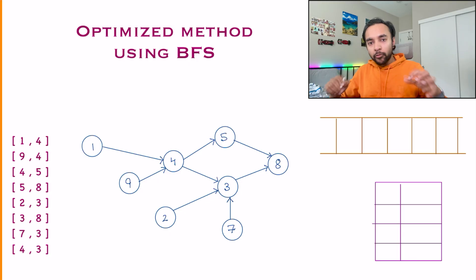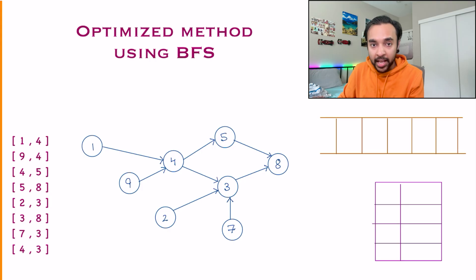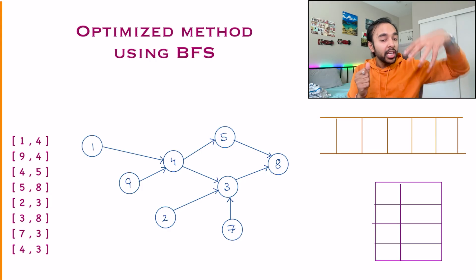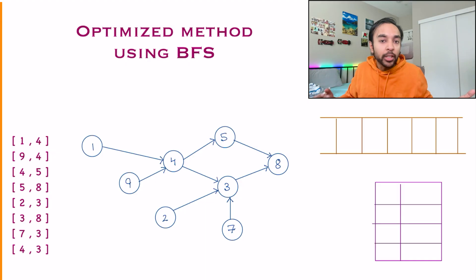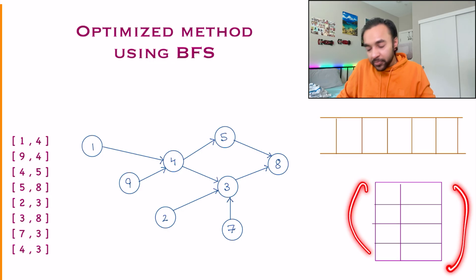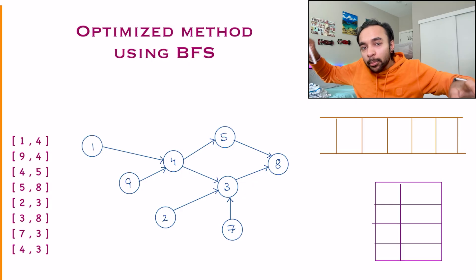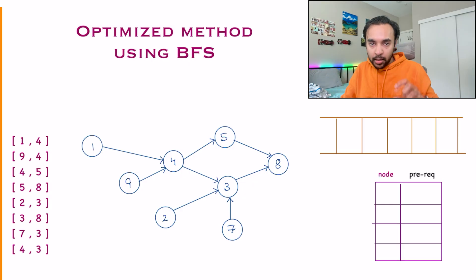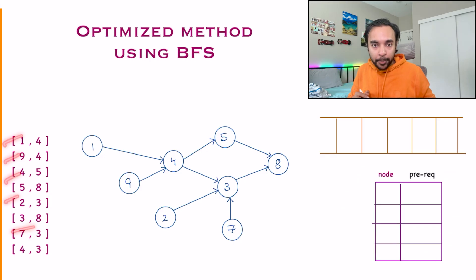That is where breadth-first search is often helpful. With BFS, you put all your elements in a queue and pop them one by one, ensuring each node is traversed only once. To apply BFS here, I maintain a queue of starting nodes and a map that stores each node along with its total in-degree — meaning the total number of prerequisites for any course. You populate this map by going over each prerequisite pair.